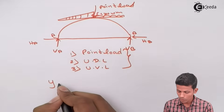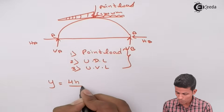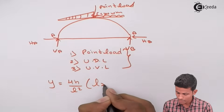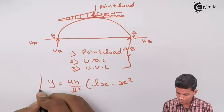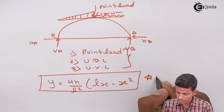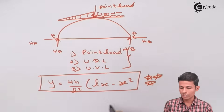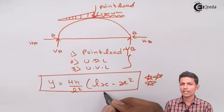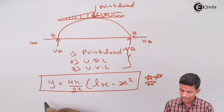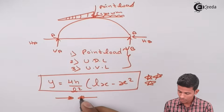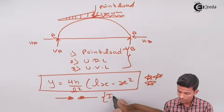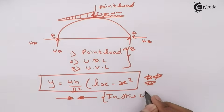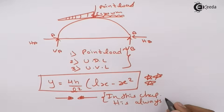In type one problems, you have to remember one formula: y = (4h / L²) × (Lx − x²). This is the main formula of this chapter. You must remember: y = (4h / L²) × (Lx − x²).